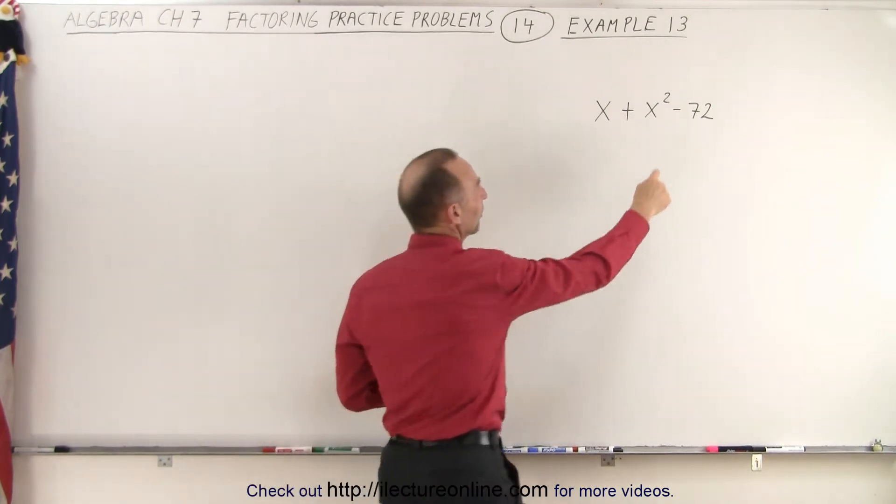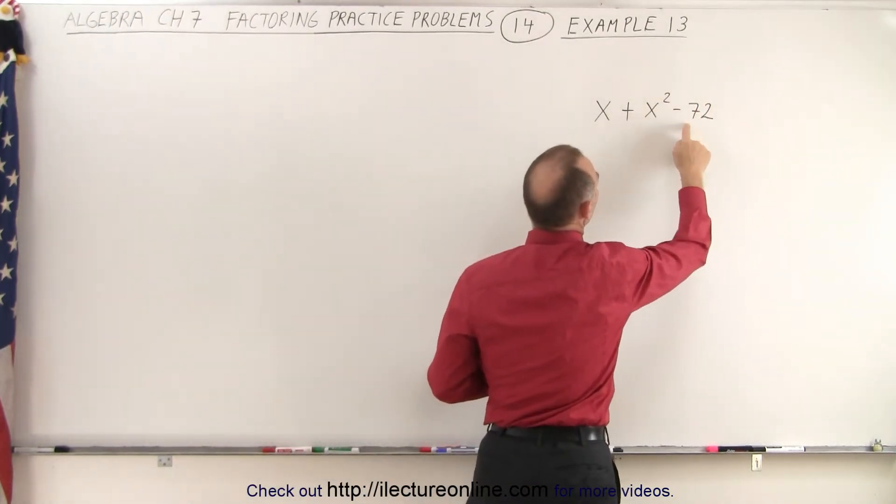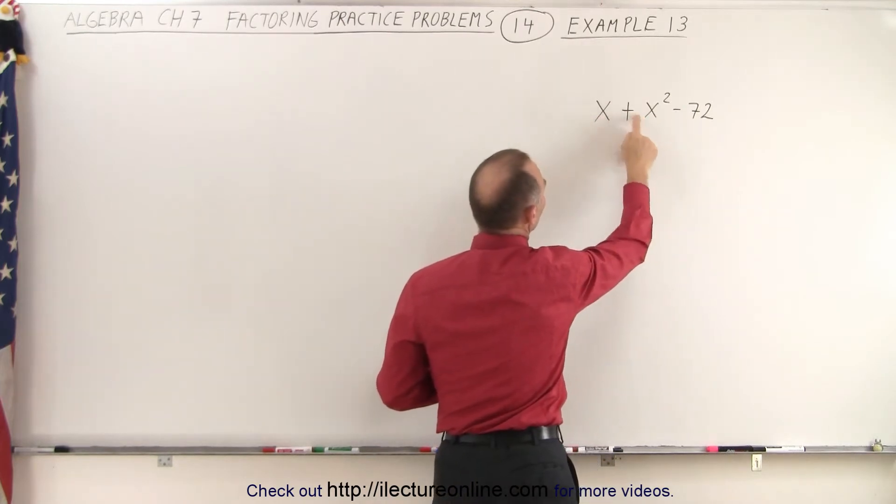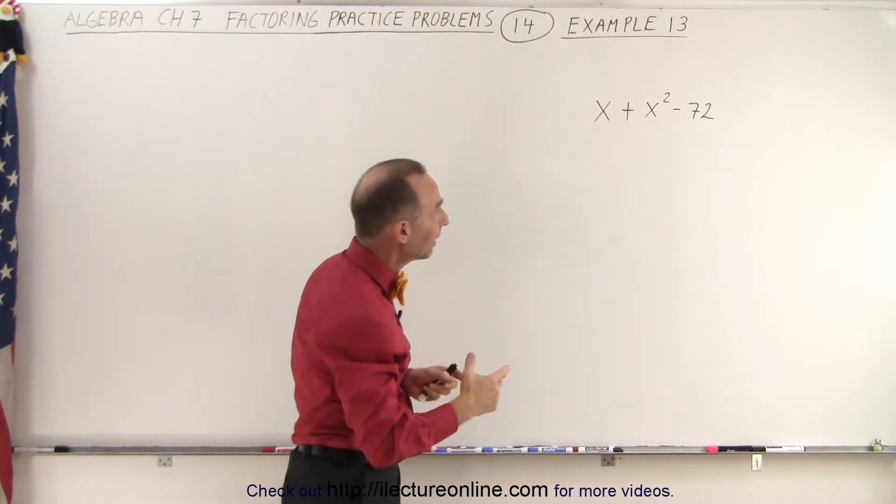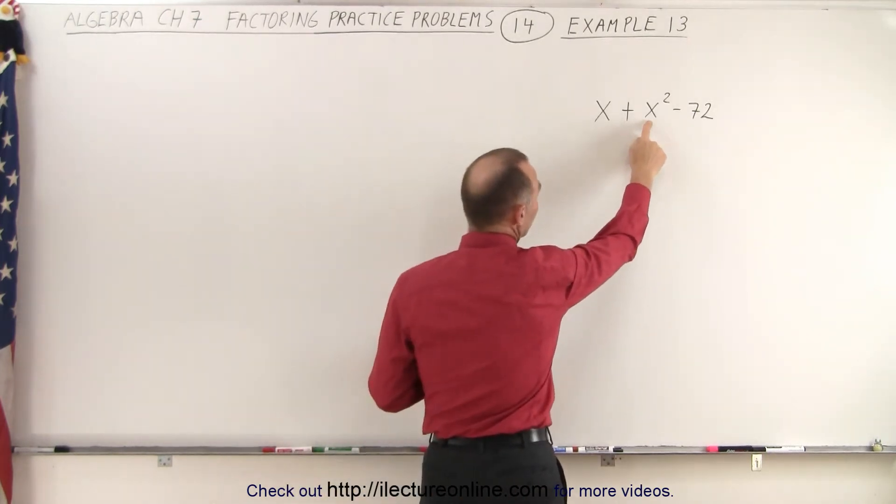First of all, we notice a very big number at the back, minus 72. We notice that here the numerical coefficients are 1 and 1, so how do we factor that? And then secondly, notice the x squared term is in the middle.